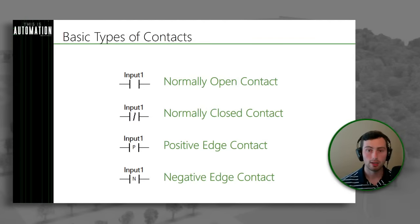With set and reset, there are some interesting use cases. When we're receiving power flow from the left-hand side, we will set a value, but when we lose power flow we're not automatically resetting it — that would be the behavior of a normal coil. The set coil is really only the first half of that: when it sees power, it sets something high, but when it loses power it doesn't change anything. Reset works the same way but for resetting a value — once it receives power flow, it takes a value from one to zero, and then when it loses power flow, nothing happens.